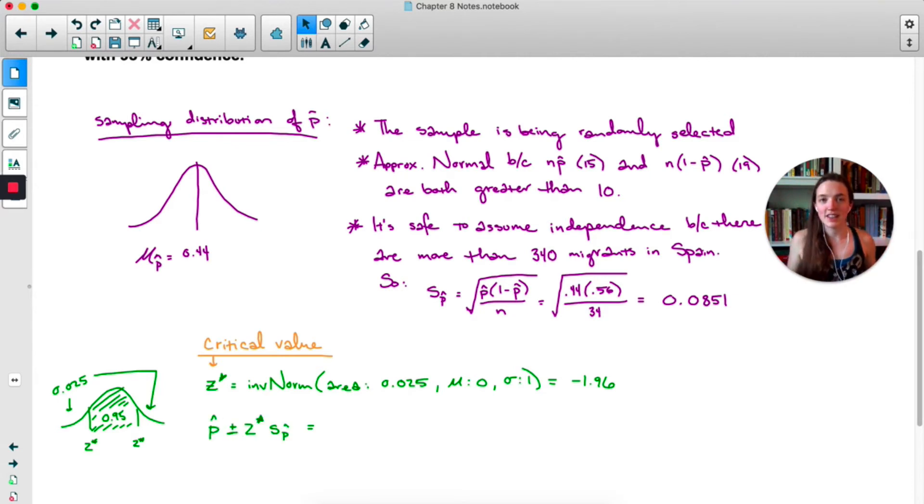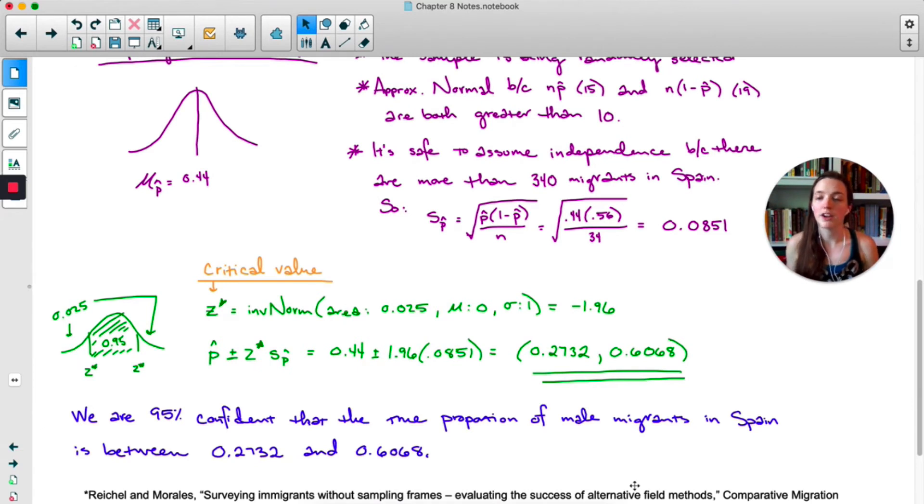So now we can do what we did in the last video. We take our estimate which in this case is P hat. We're going to do plus or minus. So we're going to add and subtract. Last time we did 2 times the standard deviation. But this time we'll do 1.96 times the standard deviation. And that standard deviation we're actually doing the standard error because we don't know the true standard deviation. So I've written out the whole formula and here it is again with numbers. And that gets us this interval 0.2732 up to 0.6068.